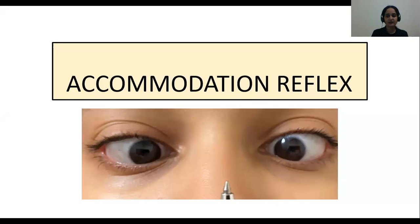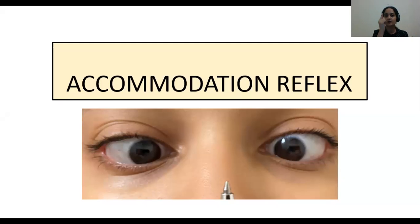While performing the Cranial Nerve Examination, we perform the Accommodation Reflex where we ask the subject to initially look at a distant object, and then the object is brought very close to the eye — like the tip of a pen or the tip of the finger — and the subject is asked to focus on it.